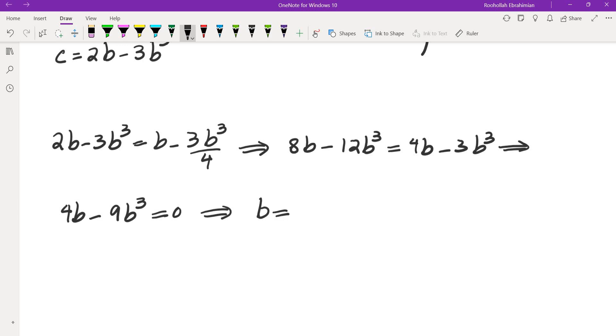So that gives us 4b minus 9b cubed is equal to 0. Because again we know b is positive, b is equal to square root of 4 over 9, which is 2 thirds. So that's b.